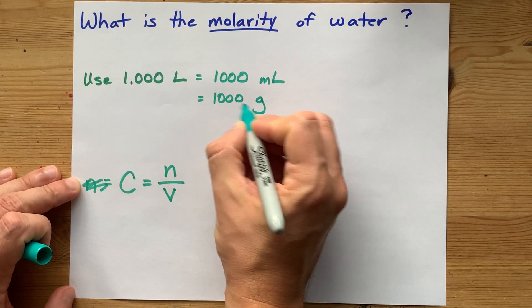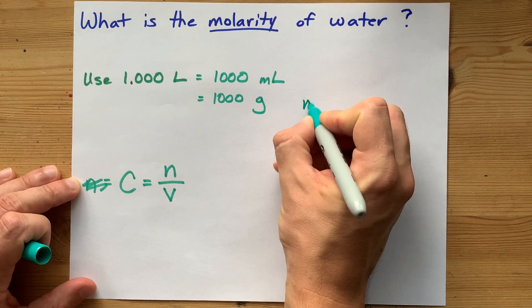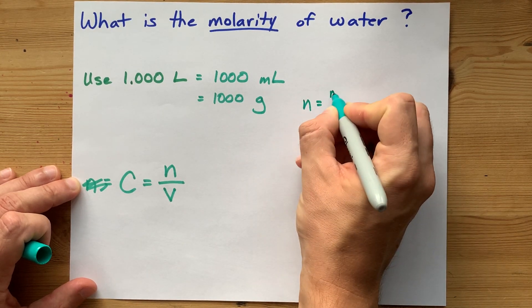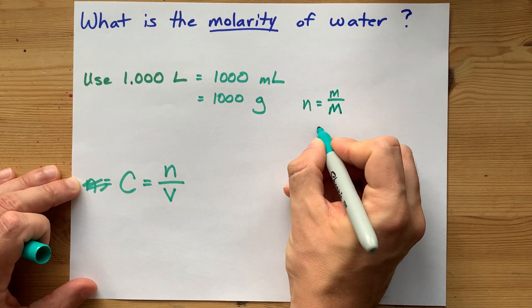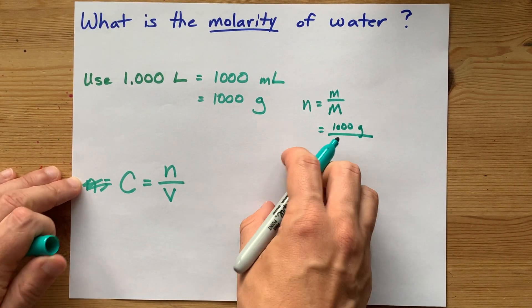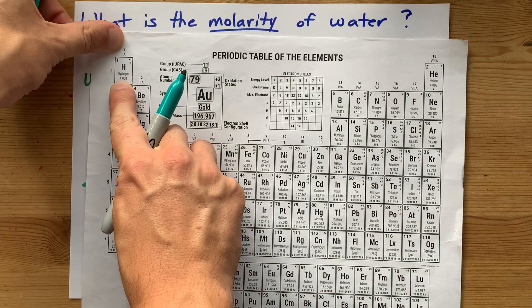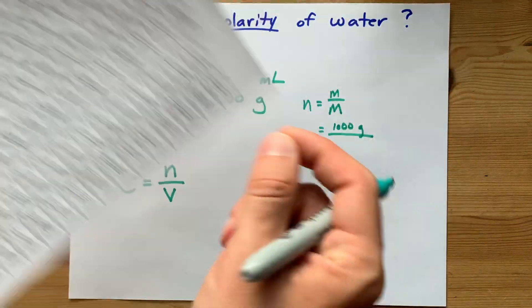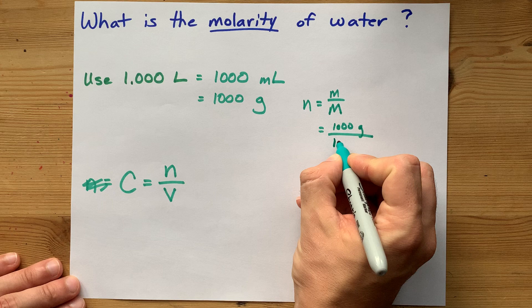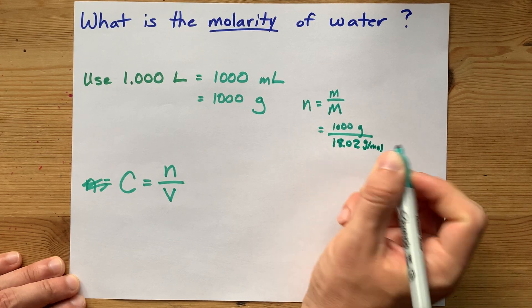The real question is how many moles is that 1,000 grams of water? Well, the number of moles can be mass divided by molar mass, 1,000 grams divided by the molar mass of water. You can calculate the molar mass by adding two H's to an O. You're using the masses from the periodic table. It ends up being 18.02 grams per mole.